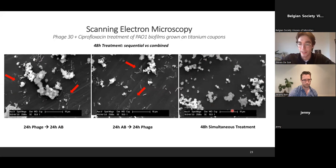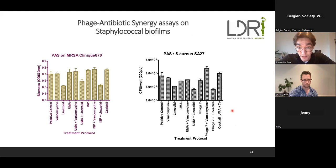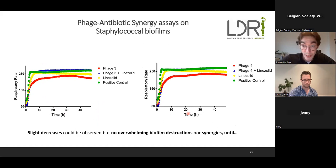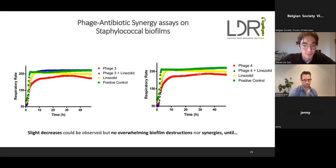After these results with Pseudomonas aeruginosa, I was very optimistic and dove into phage-antibiotic synergy assays on Staph aureus and Staph epidermidis. But the first results were quite demotivating — every time I used phage-antibiotic combinations for Staph aureus biofilms I didn't have good results. The phage alone showed a slight effect, but phage-antibiotic combinations did not produce the overwhelming biofilm destructions I had seen with Pseudomonas.